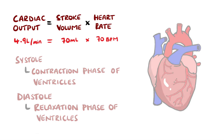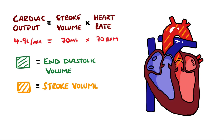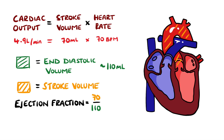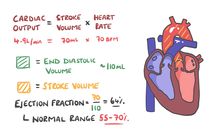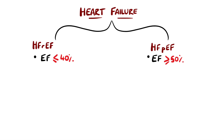Not all of the blood in the left ventricle at the end of diastole is pumped into the aorta during systole. The stroke volume is only a proportion of it. This is known as the ejection fraction. For example, our stroke volume of 70 milliliters divided by a normal end diastolic volume of 110 milliliters gives an ejection fraction of 64%. A normal ejection fraction is roughly between 55 and 70%. Heart failure can happen when the ejection fraction is lower than 40%, which is where the name heart failure with a reduced ejection fraction comes from, or when the ejection fraction is normal or high, termed heart failure with a preserved ejection fraction.